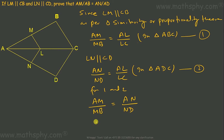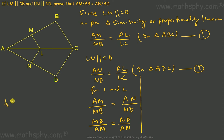Since AM over MB equals AN over ND, we can flip both sides: MB over AM equals ND over AN — just as 1 over 2 equals 2 over 4 implies 2 over 1 equals 4 over 2. Now MB can be written as AB minus AM, and ND as AD minus AN.